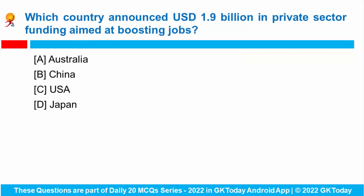Next question: Which country announced $1.9 billion in private sector funding aimed at boosting jobs? US Vice President Kamala Harris recently announced that $1.9 billion would be funded in the private sector, with the aim of boosting jobs.